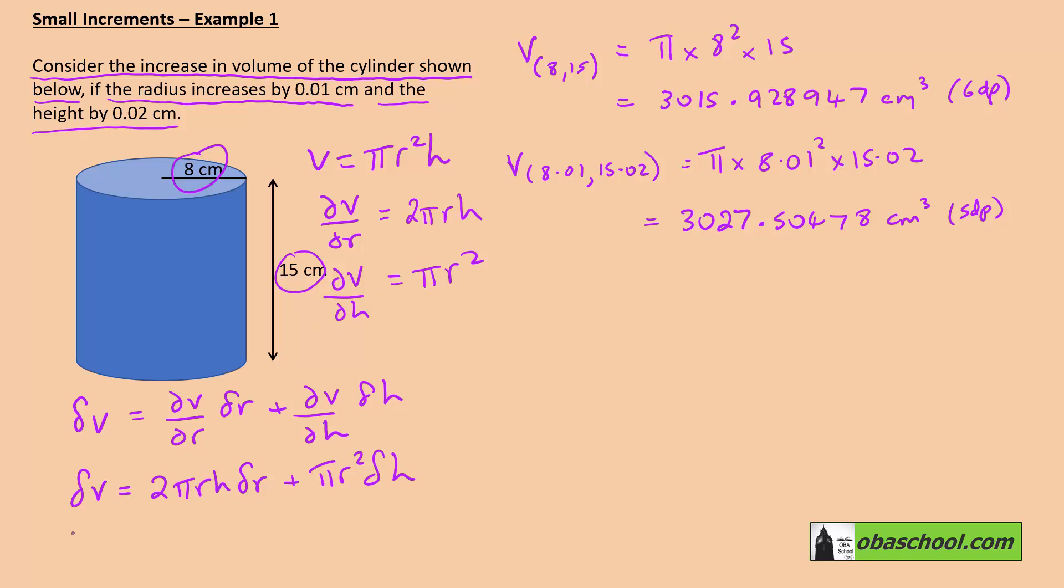Now, we've already done our increments formula here. So let's do the estimated increase of volume using the increments formula. So that's going to be 2 times pi times 8 times 15 times 0.01 plus pi times 8 squared times 0.02. And I've calculated that as 11.56106097 cubic centimeters.